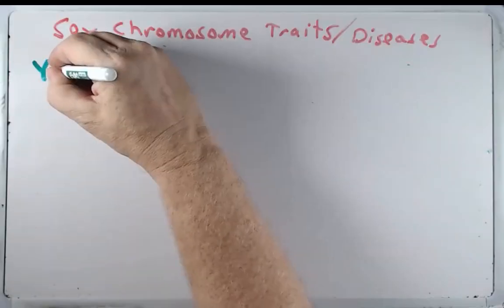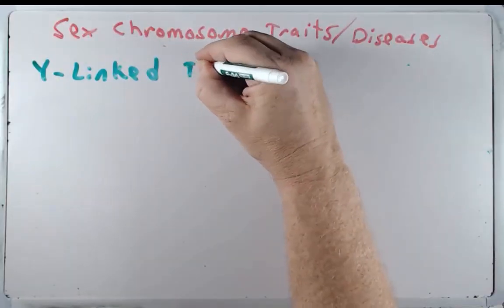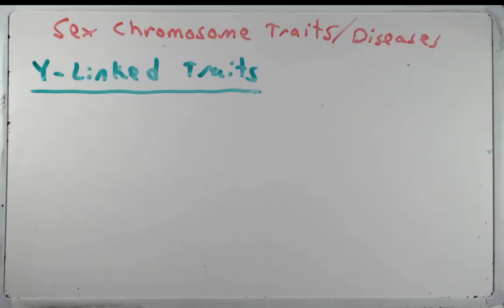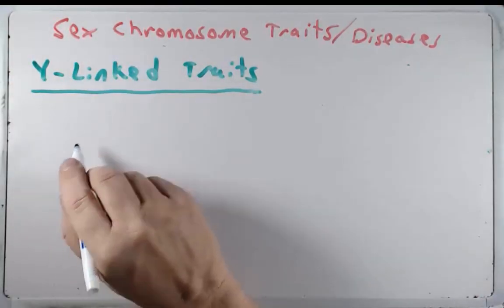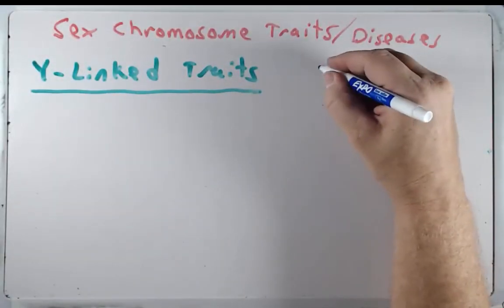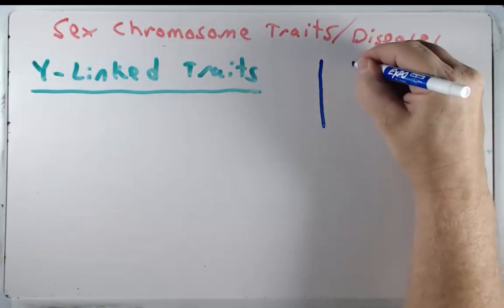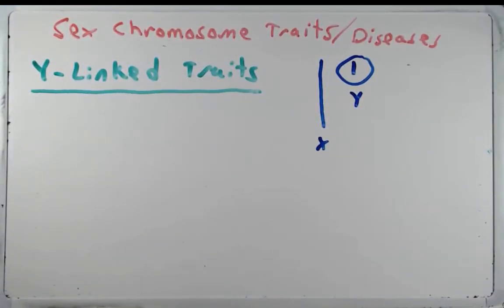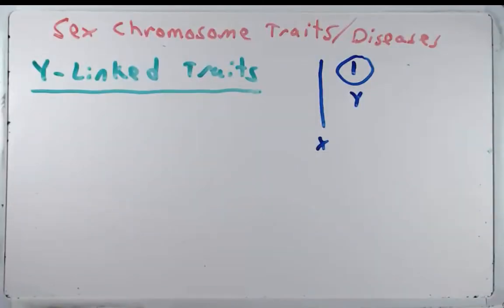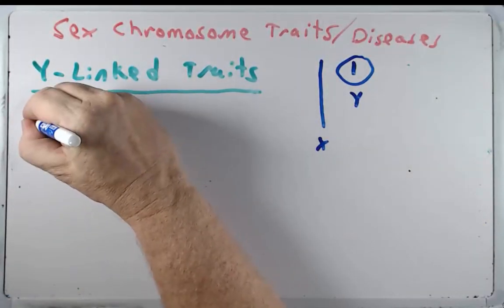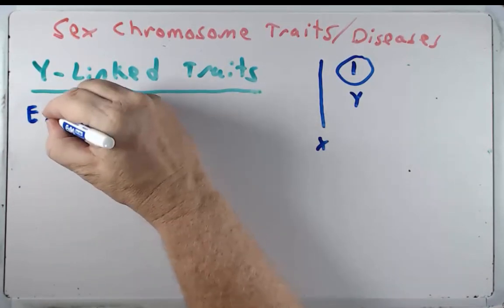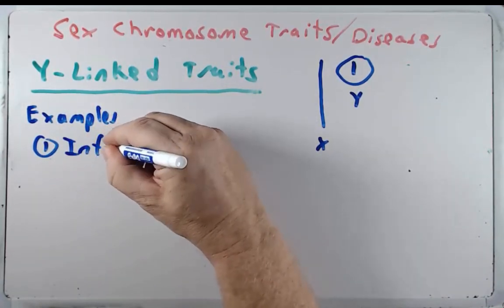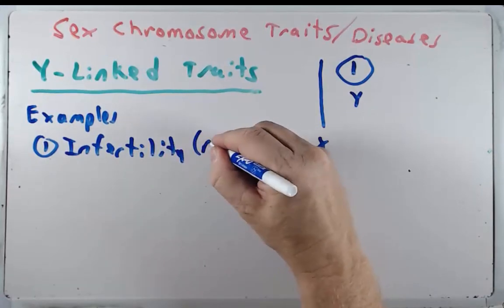Let's start with Y-linked traits. First, remember that the Y chromosome is puny — it's tiny and there are not a lot of genes on it, so there are not many traits associated with it. Most genes on the Y chromosome have a role in fertility, so it's not surprising that infertility is the main Y-linked trait example, or it could just be reduced fertility.